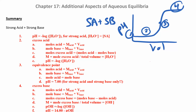In step two, you start adding some strong base. Figure out how many moles of acid you have, how many moles of base, and subtract the difference — that tells you how much extra acid you have. Divide that by the total volume, which is the volume of the acid plus the volume of the base, since both are now in your solution.